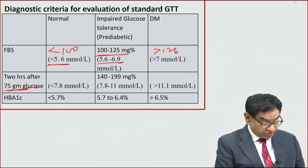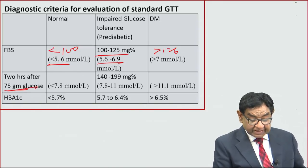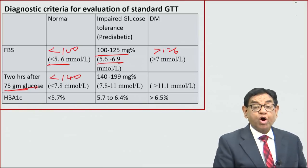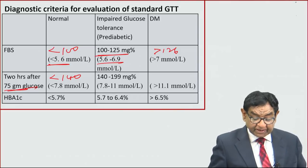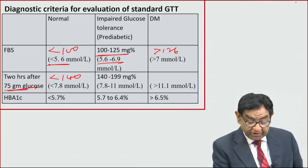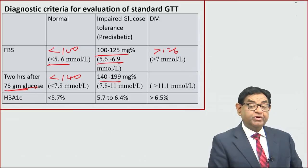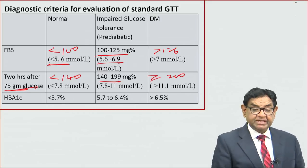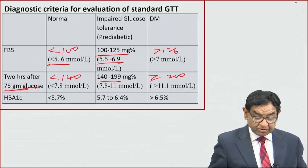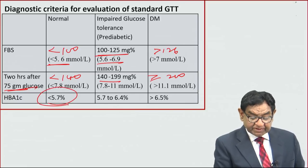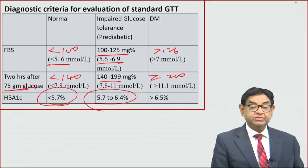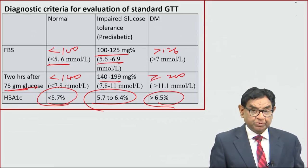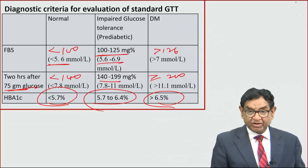For the two-hour post 75g glucose value: less than 140 mg% (less than 7.8 mmol/L) is normal; 140 to 199 is impaired; more than or equal to 200 is diabetes. For HbA1c: below 5.7% is normal; 5.7 to 6.4% is impaired; more than 6.5% is diabetes. These concepts clarify how to diagnose a case of diabetes.